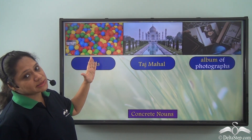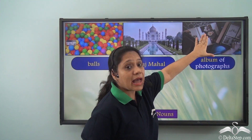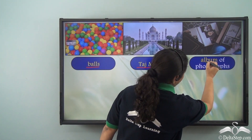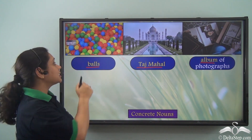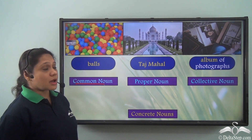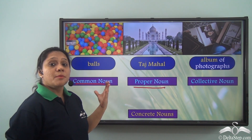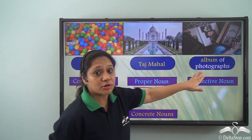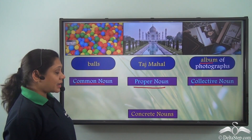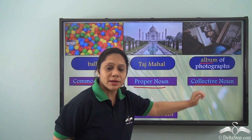Now we see a lot of balls here, the beautiful Taj Mahal, and an album of photographs. Balls, Taj Mahal, and album are all concrete nouns. Balls is a common noun. Taj Mahal is a proper noun — it is the name of a particular monument. And album is a collective noun. So concrete nouns can be either common nouns, proper nouns, or collective nouns.